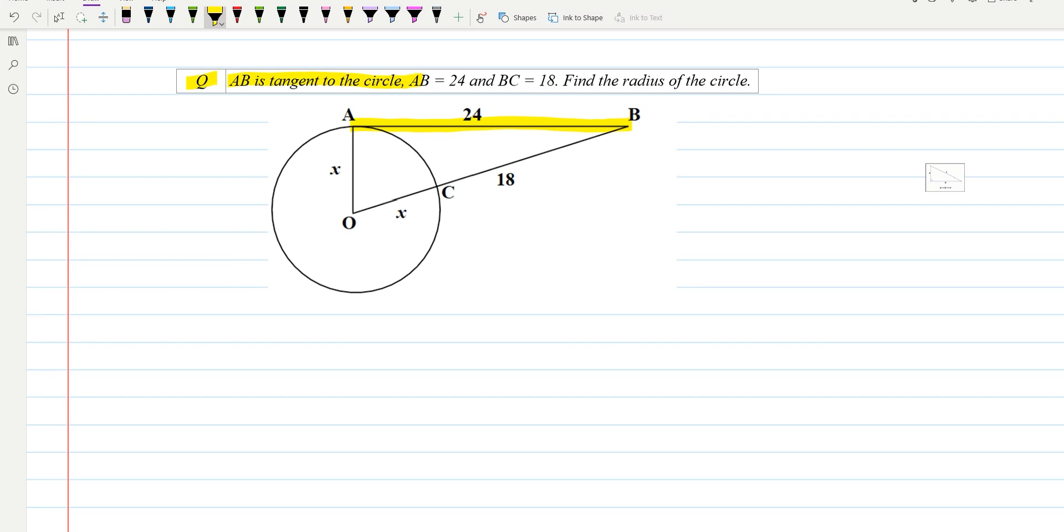AB length is given as 24 centimeters, and BC is equal to 18. BC is up to this mark only, so complete OB length is not provided. What we have to find is the radius of the circle.